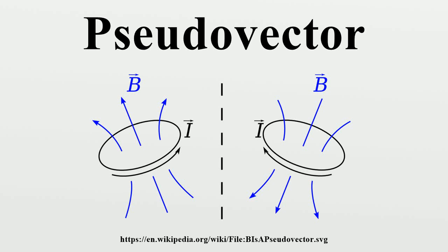In physics and mathematics, a pseudovector is a quantity that transforms like a vector under a proper rotation, but in three dimensions gains an additional sign flip under an improper rotation such as a reflection. Geometrically it is the opposite of its mirror image. This is as opposed to a true or polar vector, which on reflection matches its mirror image. In three dimensions the pseudovector P is associated with the cross product of two polar vectors R and B, and the vector P calculated this way is a pseudovector.